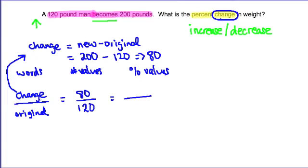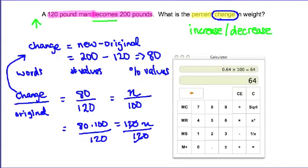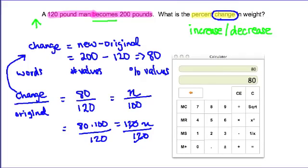The amount of change is 80 and the original amount is 120. The percent change is what we don't know, so that's going to be our variable N, and the original percent is always 100. Now we have a simple cross product: 80 times 100 equals 120N. Dividing both sides by 120 and using a calculator: 80 times 100 divided by 120 equals 66.6 percent.